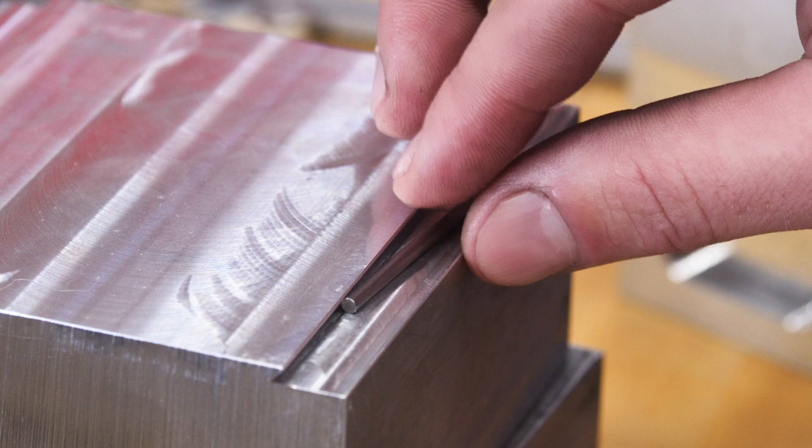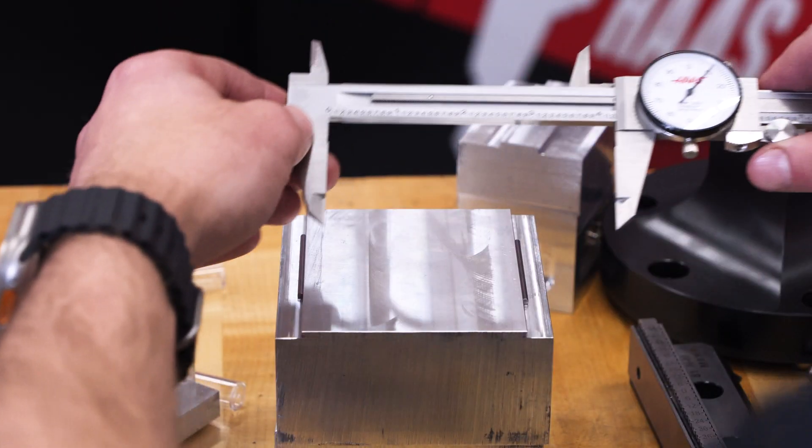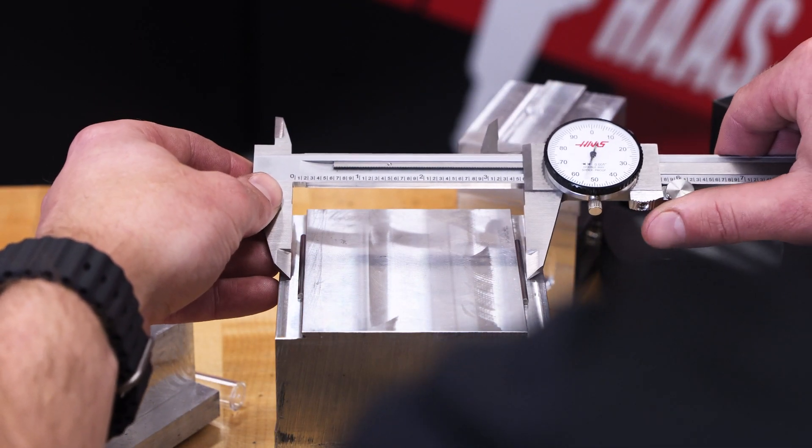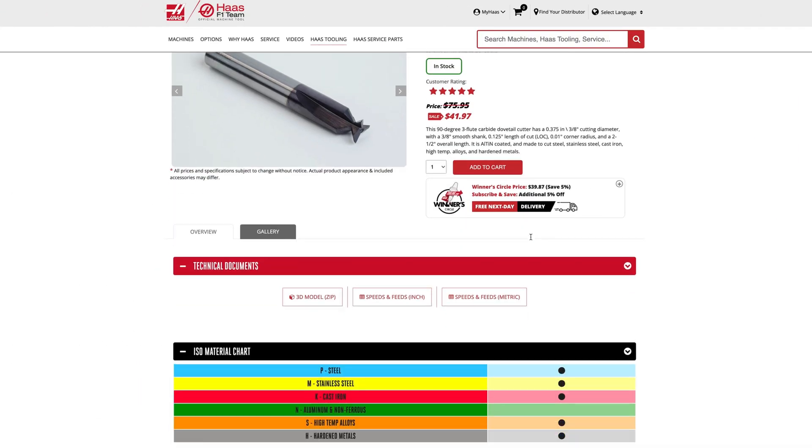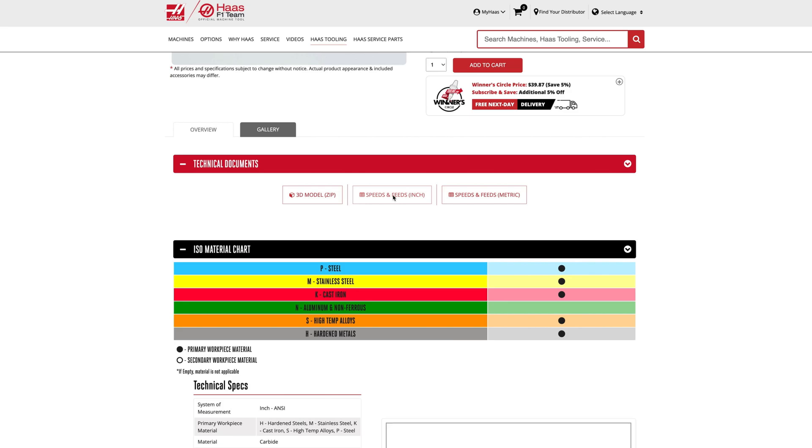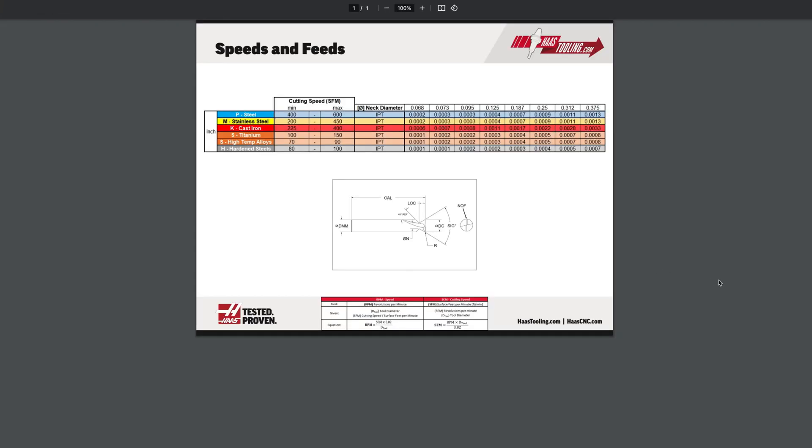Once you're done cutting, the easiest way to measure these is to throw some small gauge pins into the dovetails and measure across them. We've made speeds and feeds super easy by having charts for all of our tools and recommended materials available on HaasTooling.com.